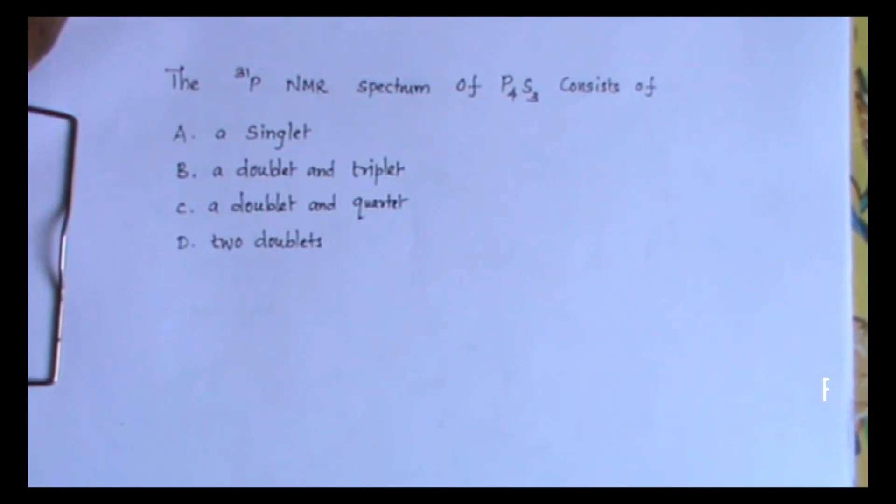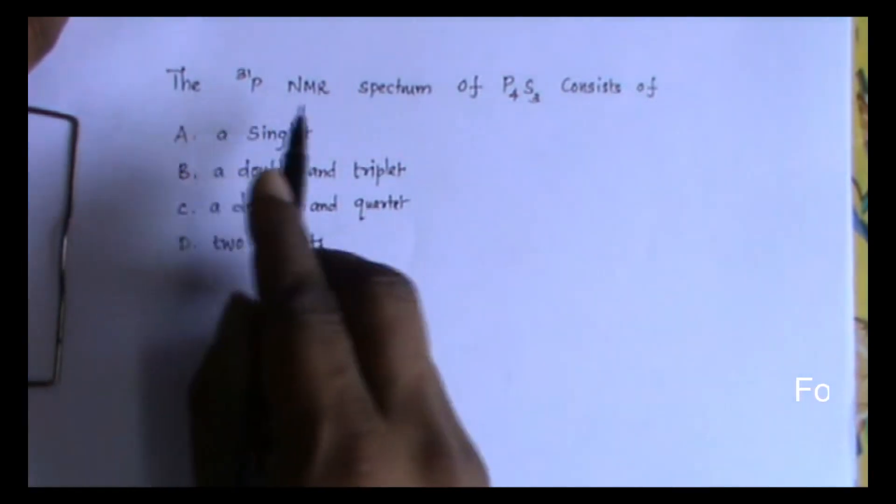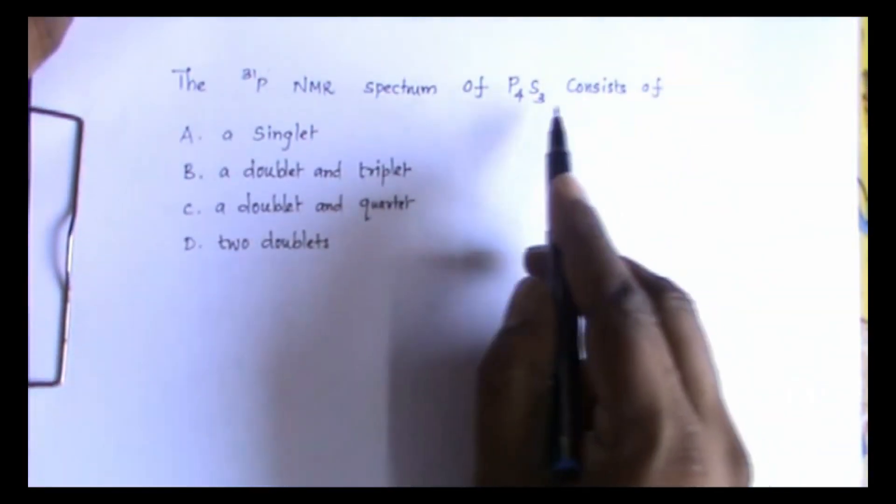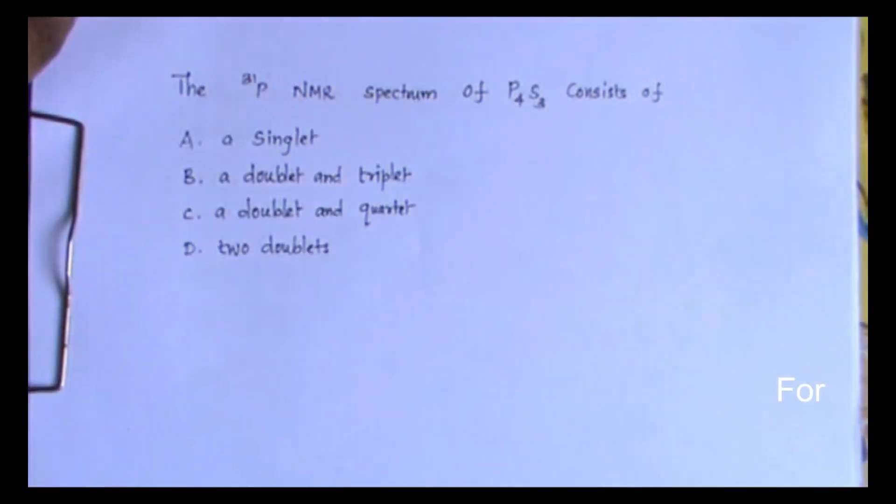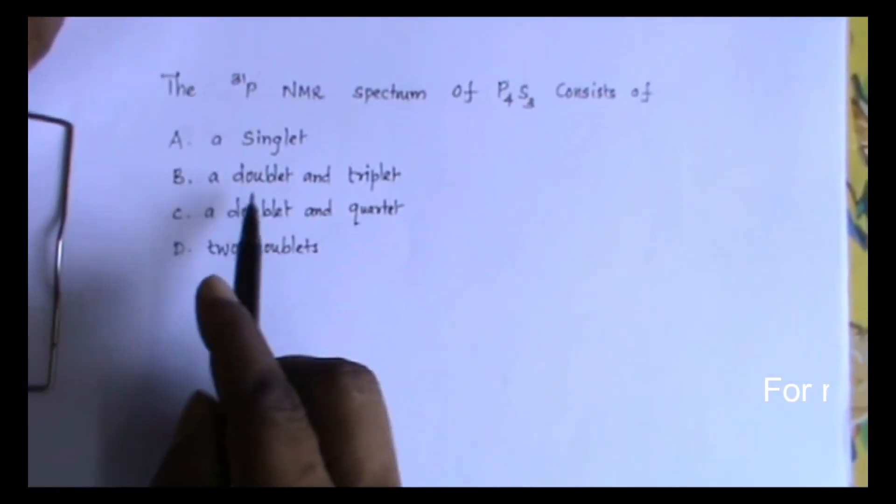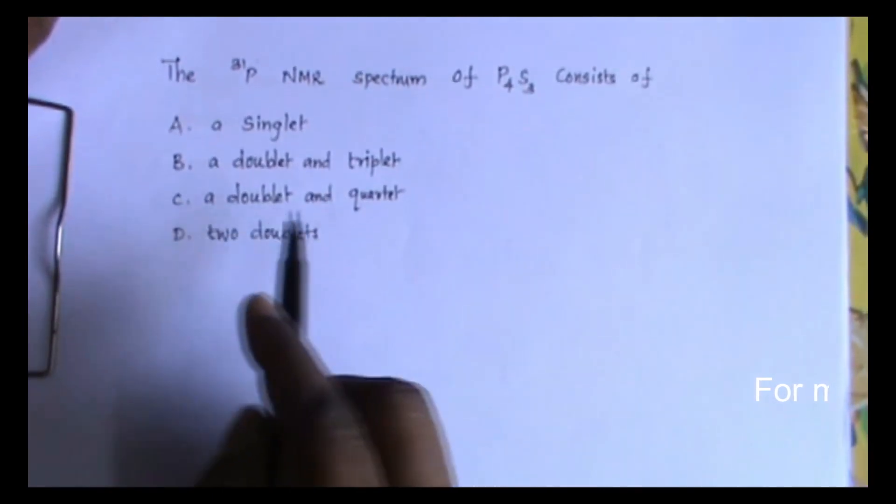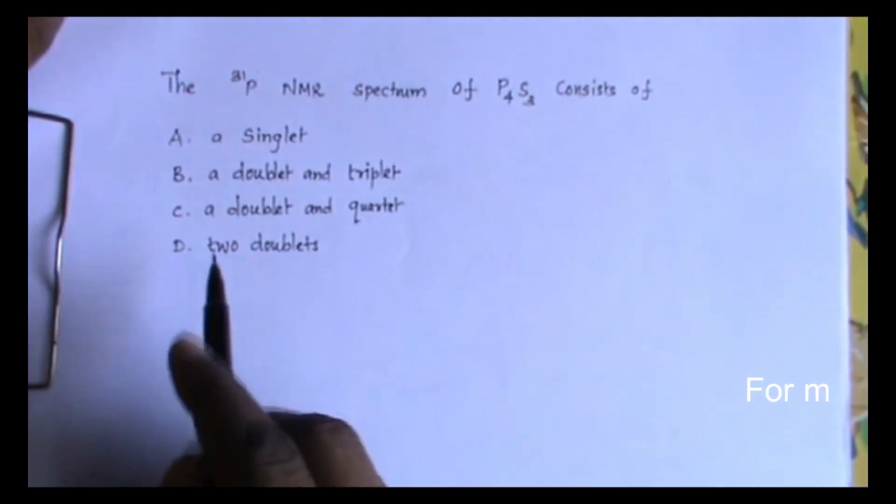In this video we are going to solve an interesting problem on phosphorus-31 NMR spectrum. The phosphorus-31 NMR spectrum of P4S3 consists of options: a singlet, a doublet and triplet, a doublet and quartet, or two doublets.